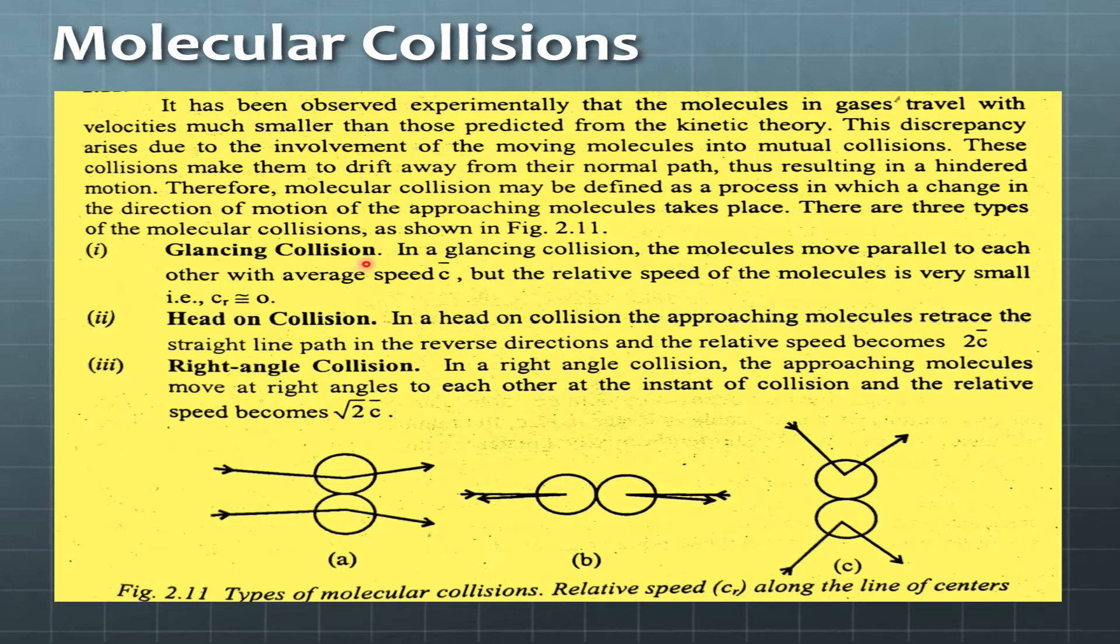The first one is glancing collision. In glancing collision, the molecules move parallel to each other with average speed c bar. One molecule is coming from this side and another from this side. At the point of contact they will collide with one another, and after that the direction of motion may change.